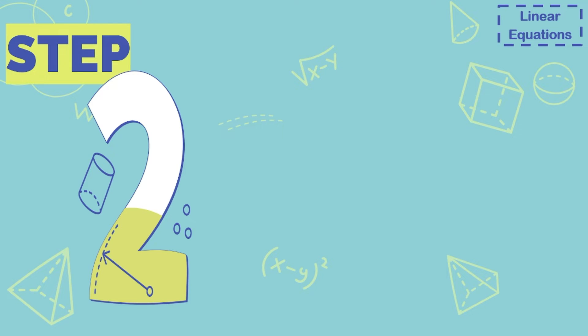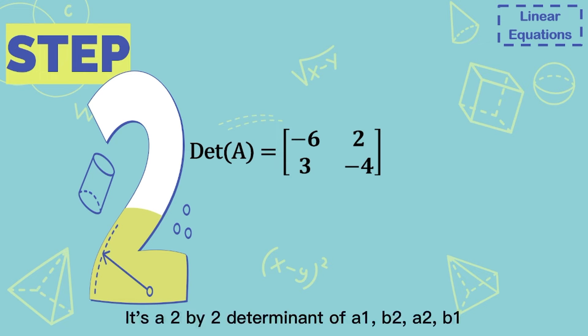Step 2: d is a determinant, so let's calculate d first. So d is the 2x2 determinant of a1, b2, a2, b1.